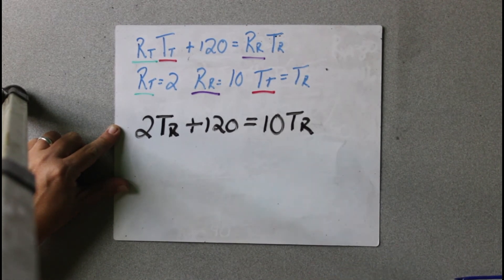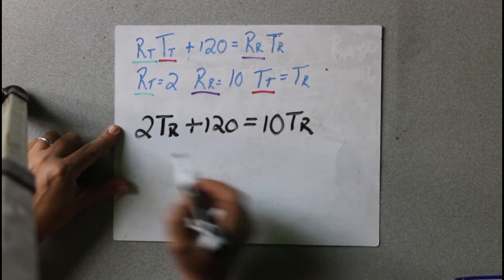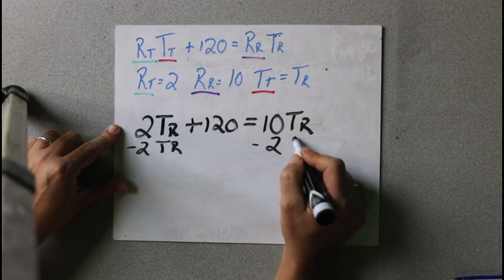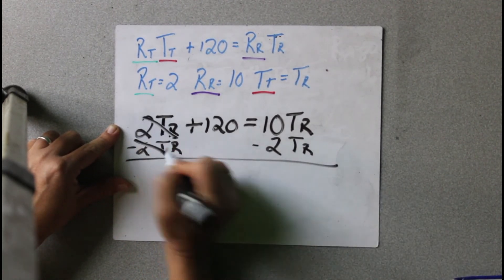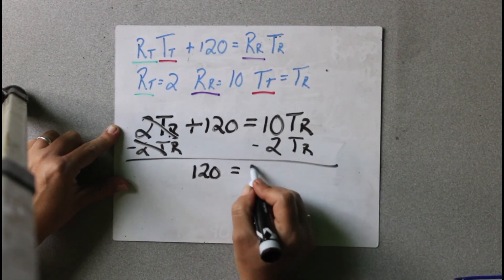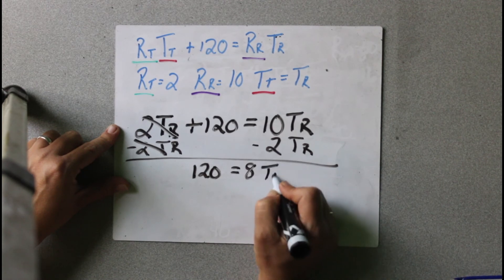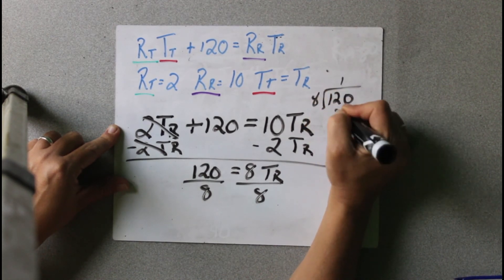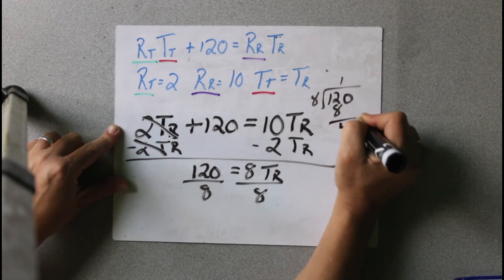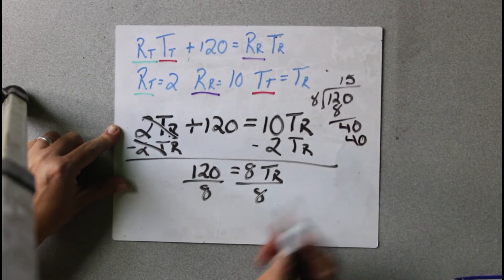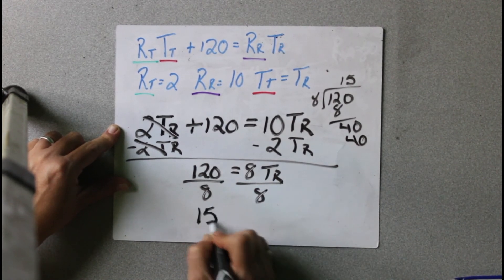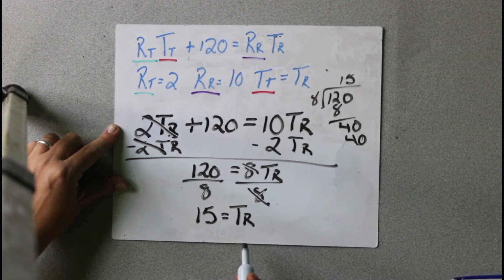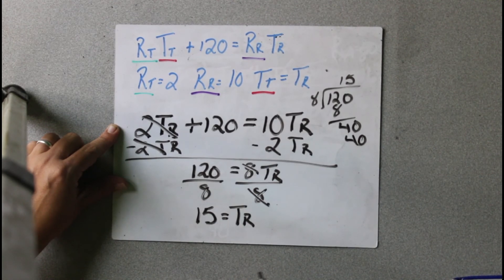Now we just have to solve. I'm going to put both variables on the same side, so I'm going to move 2TR over: minus 2TR here and minus 2TR there. Those cancel and I have 120 equals 8TR. Now I just divide by 8. 120 divided by 8: 8 times 4 is 12, so it will be 15. TR equals 15.